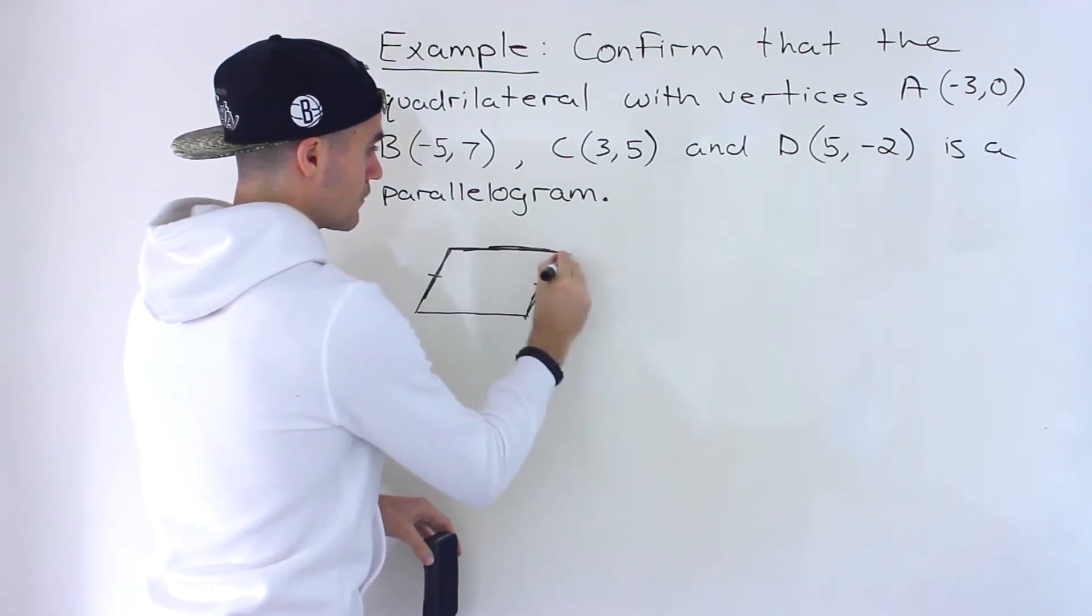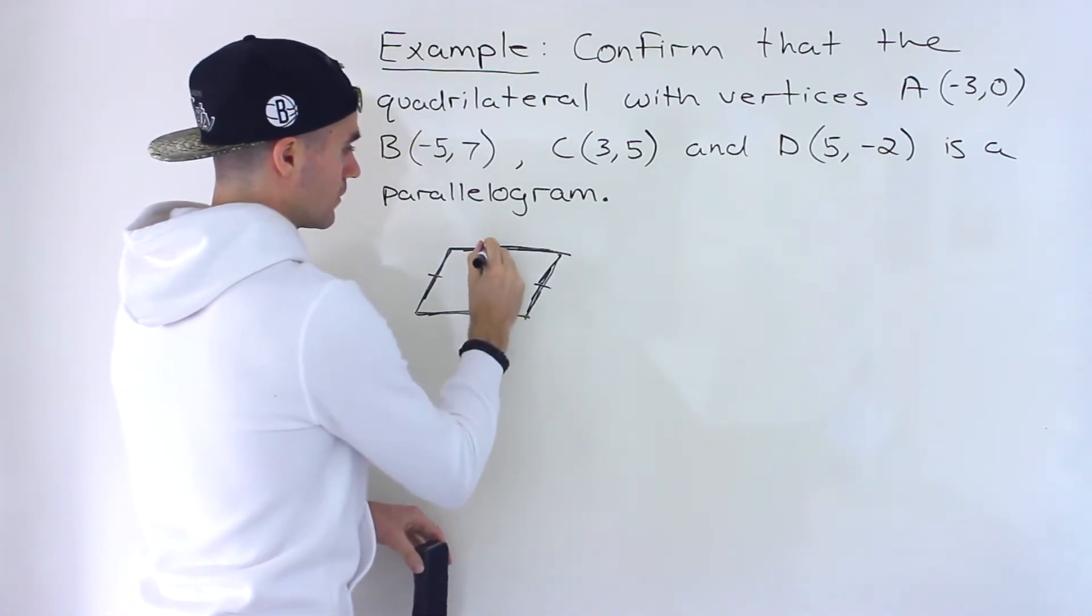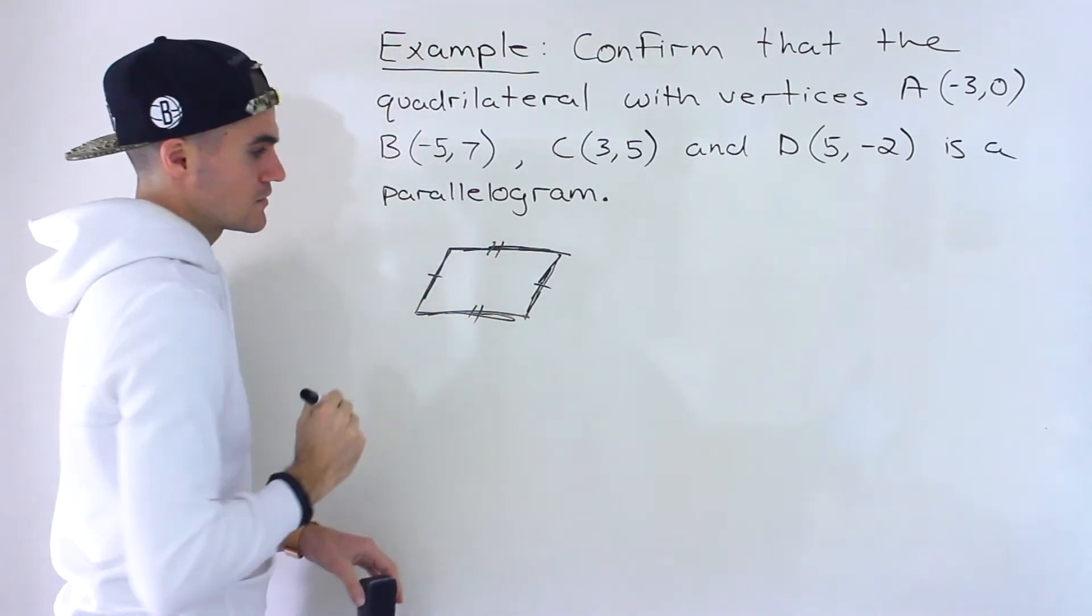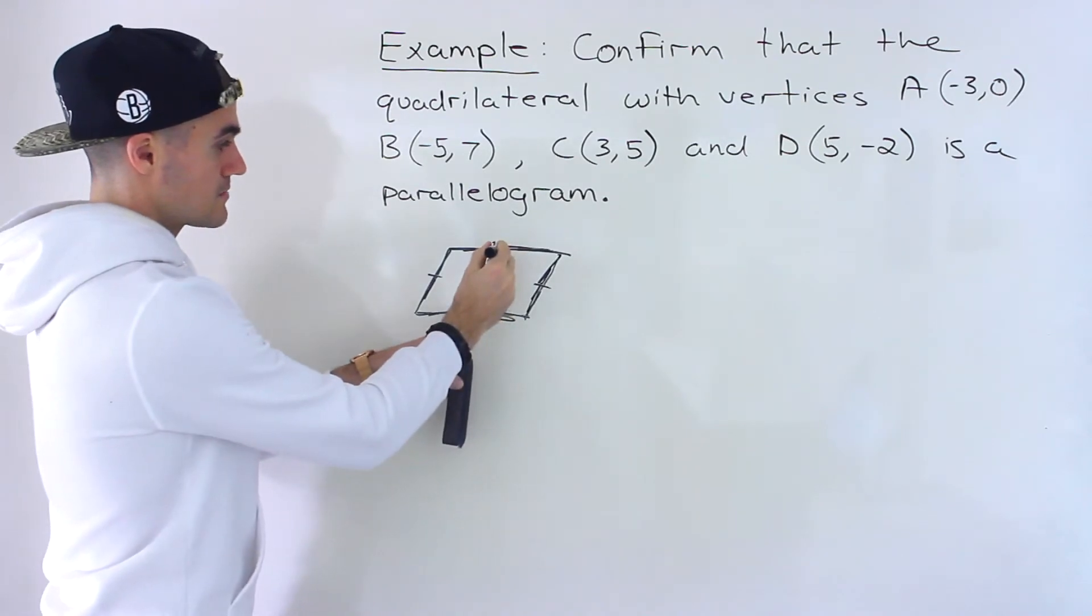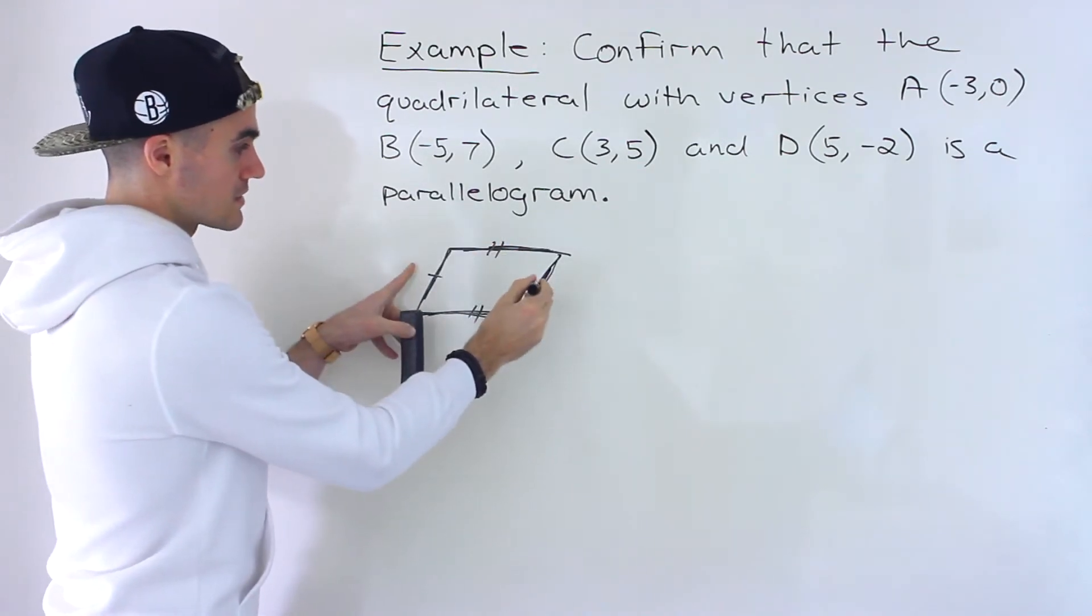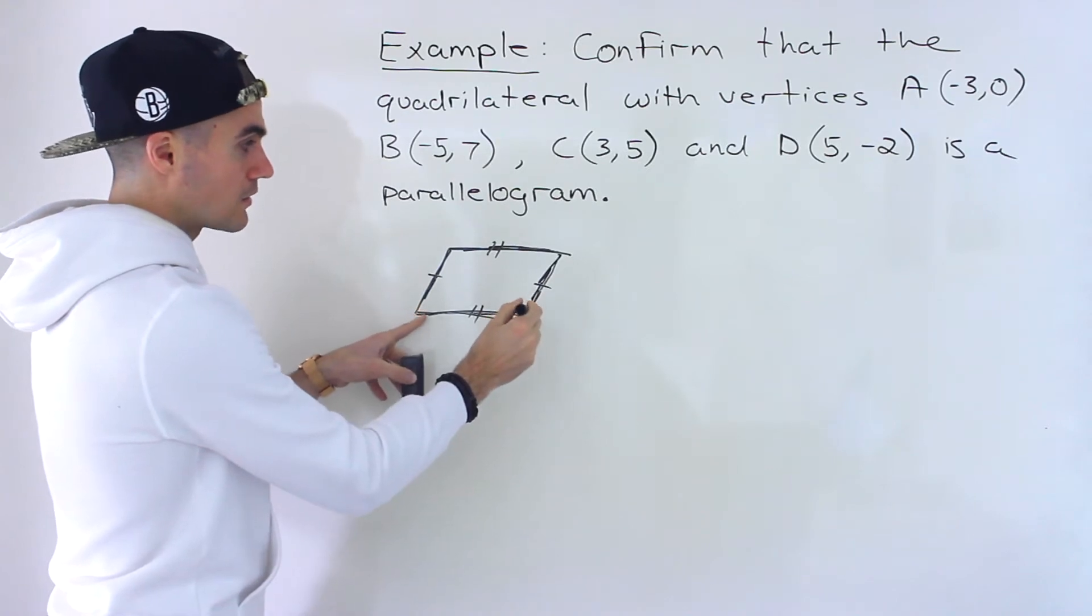And then these two sides are parallel. These two sides have the same slope. That's all you have to do. As long as these two sides have the same slope, as long as they're parallel, as long as these two sides have the same slope, as long as they're parallel, then you prove that this quadrilateral is a parallelogram.